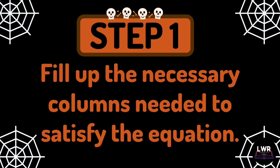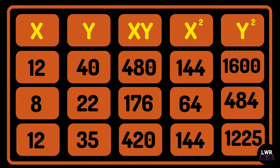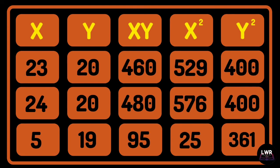Step number 1: fill up the necessary columns needed to satisfy the equation. This is what the first set of rows in the table should look like. And the last 3 rows should look like this.